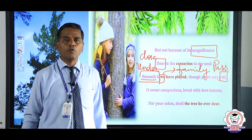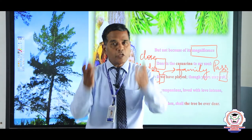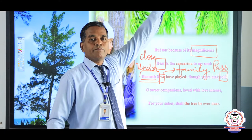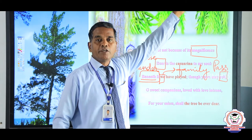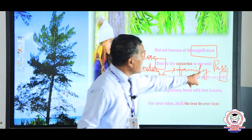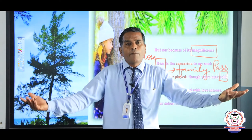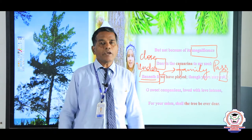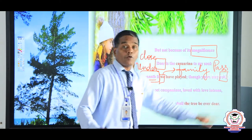She wrote this poem not while sitting in India, but from a distant land — somewhere in France or Italy. She recalls her childhood memories from afar. That is why she says many years have passed. She has lost her dear brother and sister, and now she is also on the brink of death, counting her days. 'Though years may roll.'